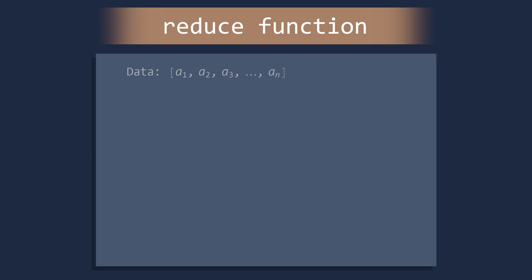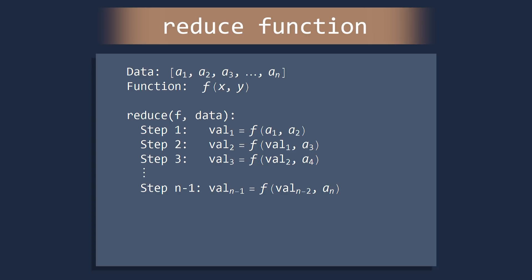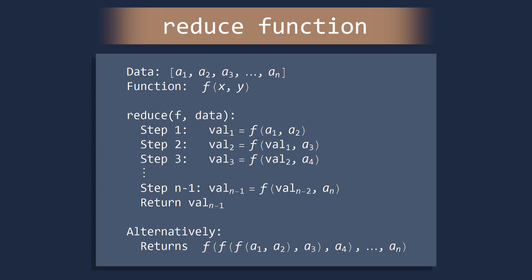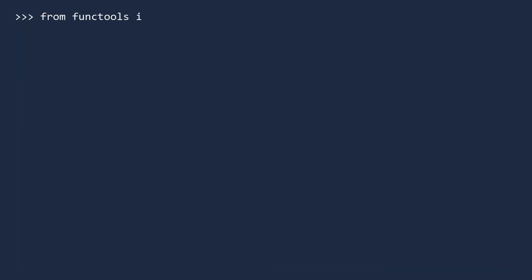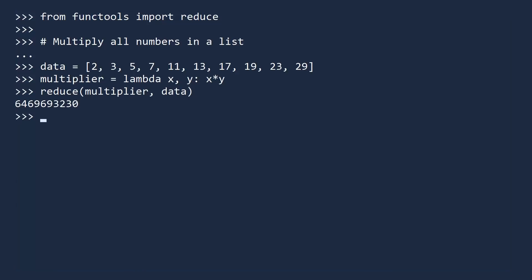Here is how the Reduce function works. Suppose you have a sequence of data and a function that takes two arguments. The Reduce function will first apply f to the first two terms, then apply f to the output value and the third piece of data, repeating this process. In each step, it applies f to the previous output value and the next term in the sequence. Once it reaches the last piece of data, it returns the final value — alternatively, the Reduce function computes a nested value. To use it, we must first import it from the functools module. Here, we multiply all numbers in a list — specifically the first ten prime numbers — using a lambda expression that multiplies two inputs. And there is the product. Here is how it would look using a for loop instead. Which do you prefer?